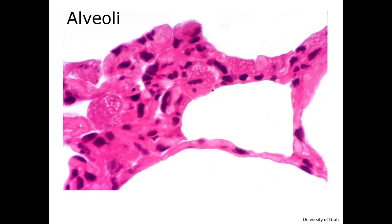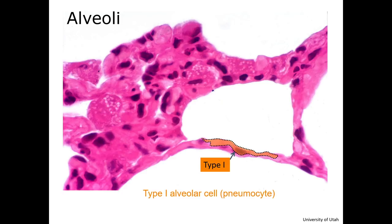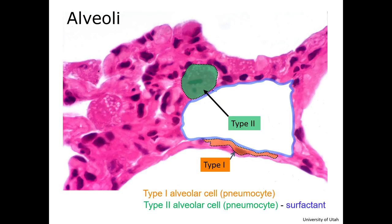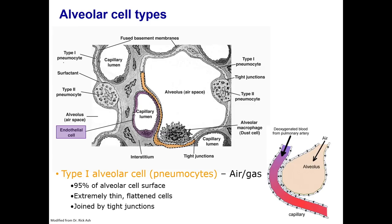Let's take a closer look at the histology of the alveolus. Capillary endothelial cells of the alveolar walls are very thin, continuous capillaries. The alveolar epithelium has two cell types, type 1 and type 2 alveolar cells, also called pneumocytes. The type 1 alveolar cell represents about 95% of the cell's surface, but these are extremely thin, flattened cells that are joined by tight junctions that prevent leakage of tissue fluid into the alveolar airspace.